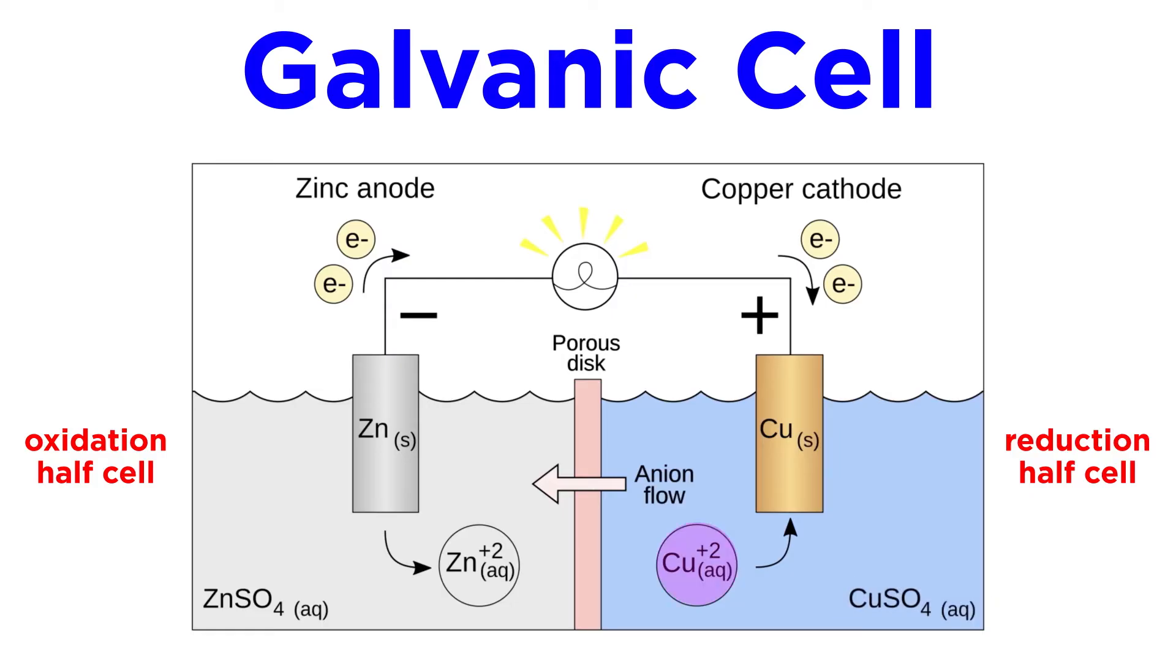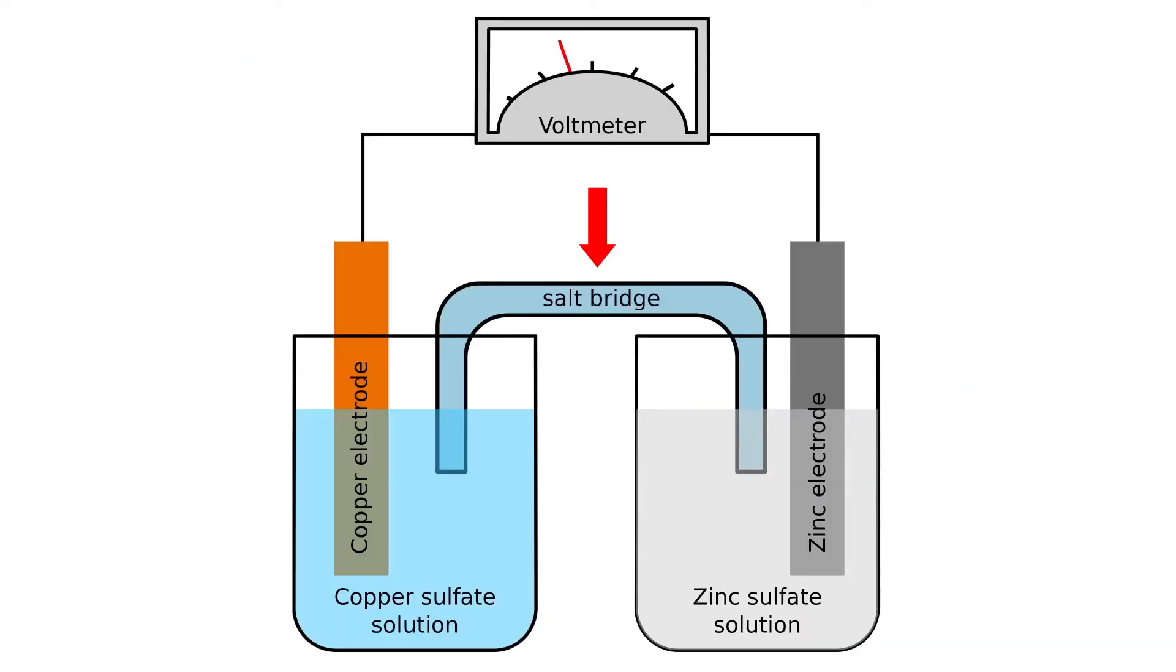The copper ions gain two electrons to become neutral copper and deposit on the copper electrode. We must connect these two cells by what we call a salt bridge. A salt bridge is a salt solution that is used to transfer ions and reduce the accumulation of charge on either side. When the half-cells are prepared and ready to go, they will be producing electricity.